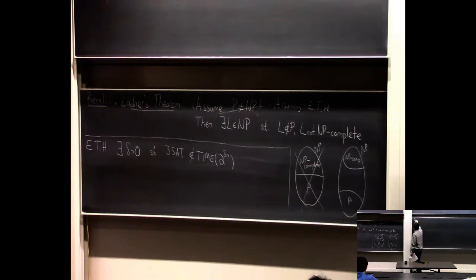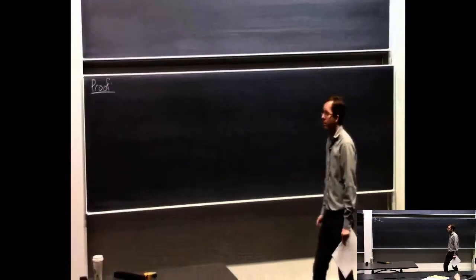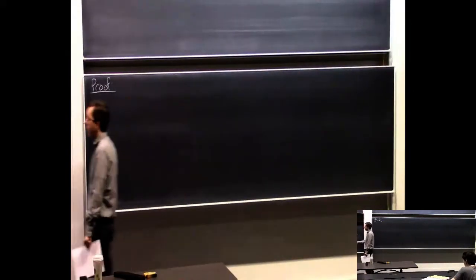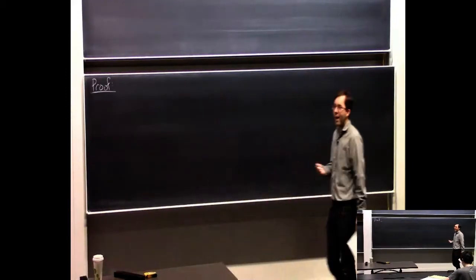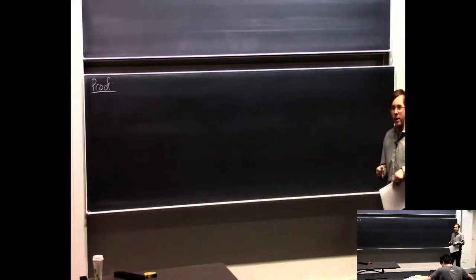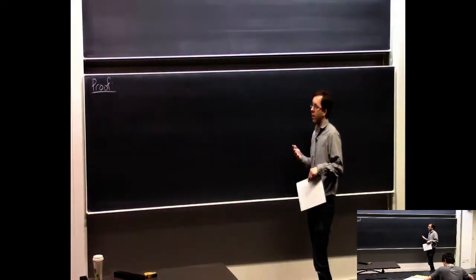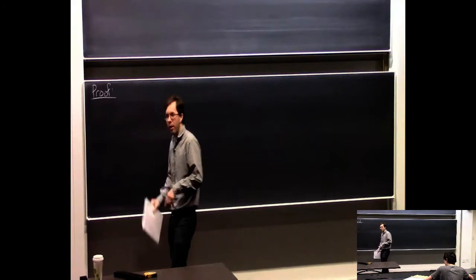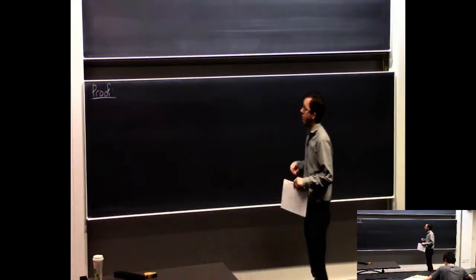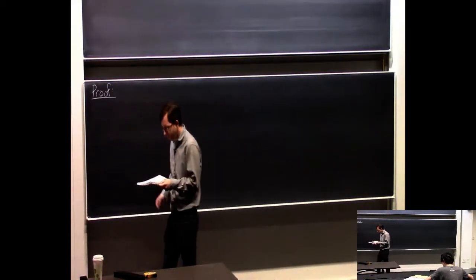The proof will use a language based on the idea of padding that we saw last time. Basically, we're going to take a hard problem — specifically 3SAT, since we're operating under the ETH assumption — and water it down halfway with this padding technique to make the input length artificially longer. That will give some extra time to the algorithm, but not so much that it can run an exponential time algorithm. This choice of 2 to the root n is cleverly chosen to be between polynomial and fully exponential.